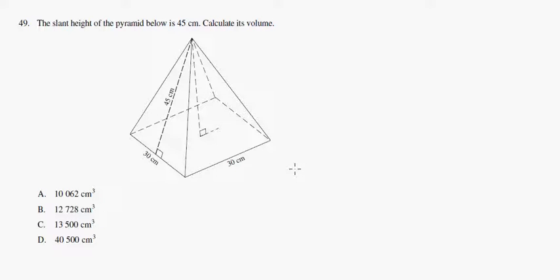Alright, question 49 from Particle Provincial B tells us the slant height of the pyramid below is 45 cm. Calculate the volume.